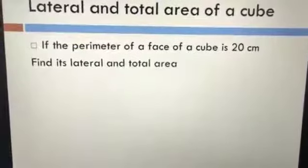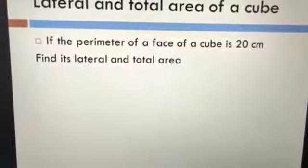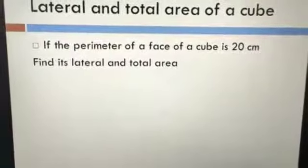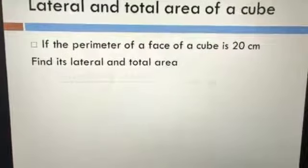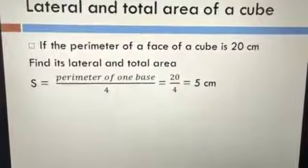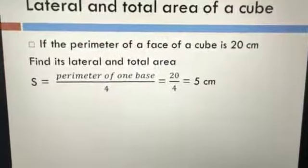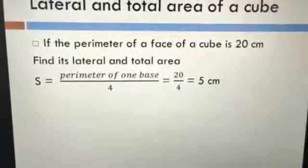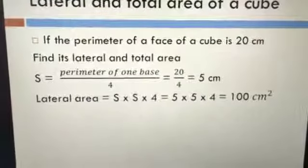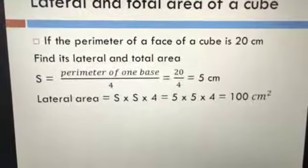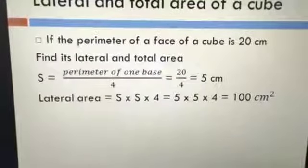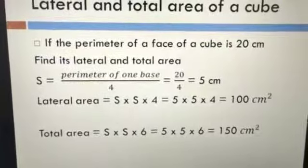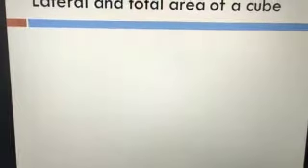Next: if we have the perimeter of one face equal to 20 and want to get the lateral and total area. First, find the side length: side equals perimeter divided by four, equal to 20 divided by 4, equals 5 centimeters. Lateral area equals 5 times 5 times 4, equals 100 centimeters squared. Total area equals 5 times 5 times 6, equals 150 centimeters squared.